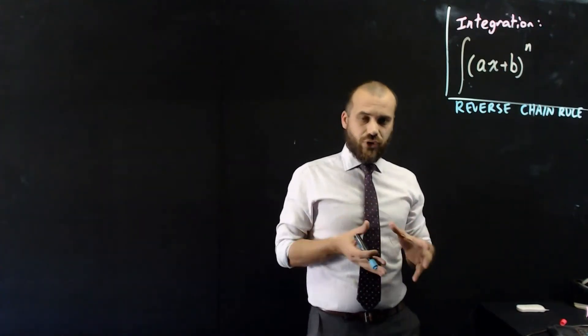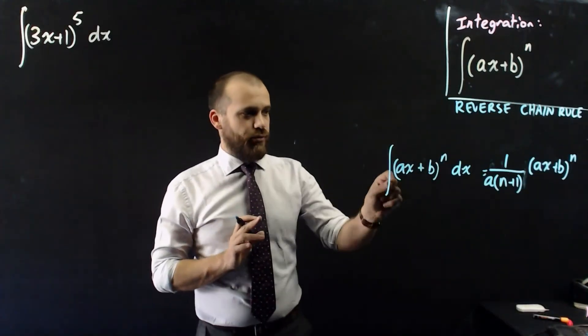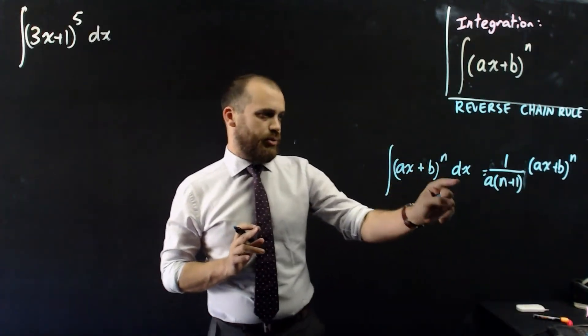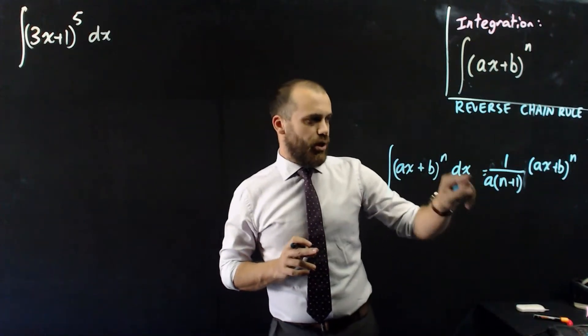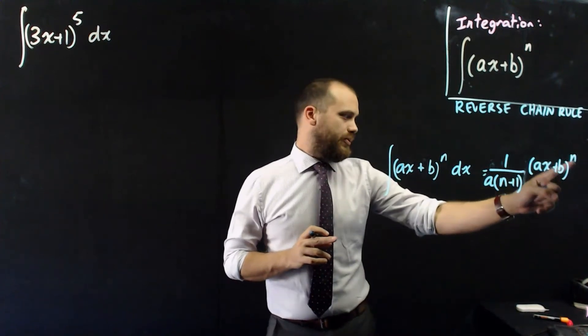All right, so I'm just going to give you the formula straight up and then we'll apply it to a couple of questions. Here's our formula: the integral of ax plus b to the power of n with respect to x is equal to 1 over a times n plus 1 times ax plus b to the power of n plus 1.